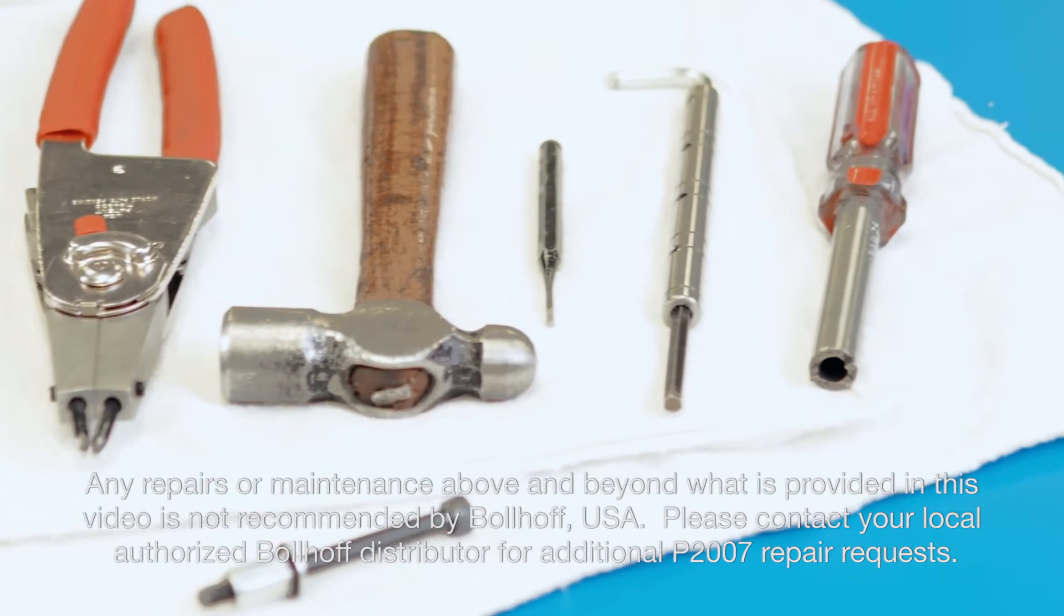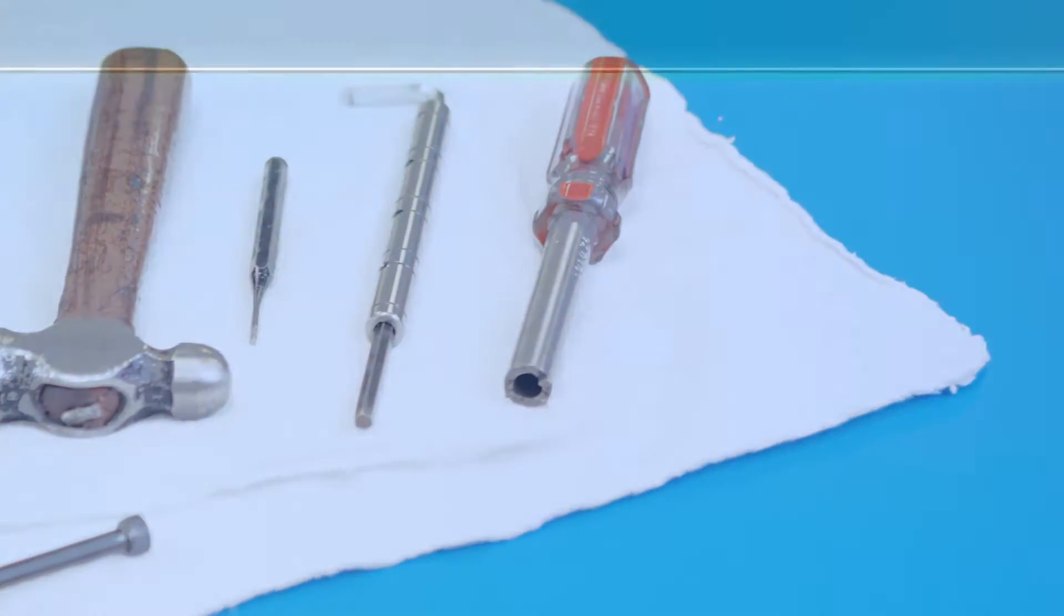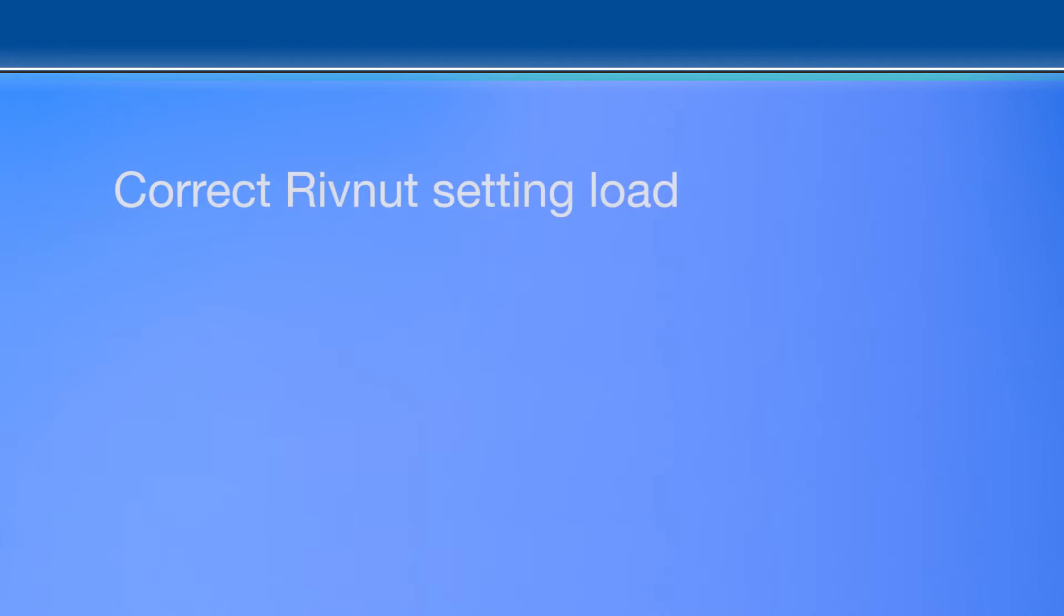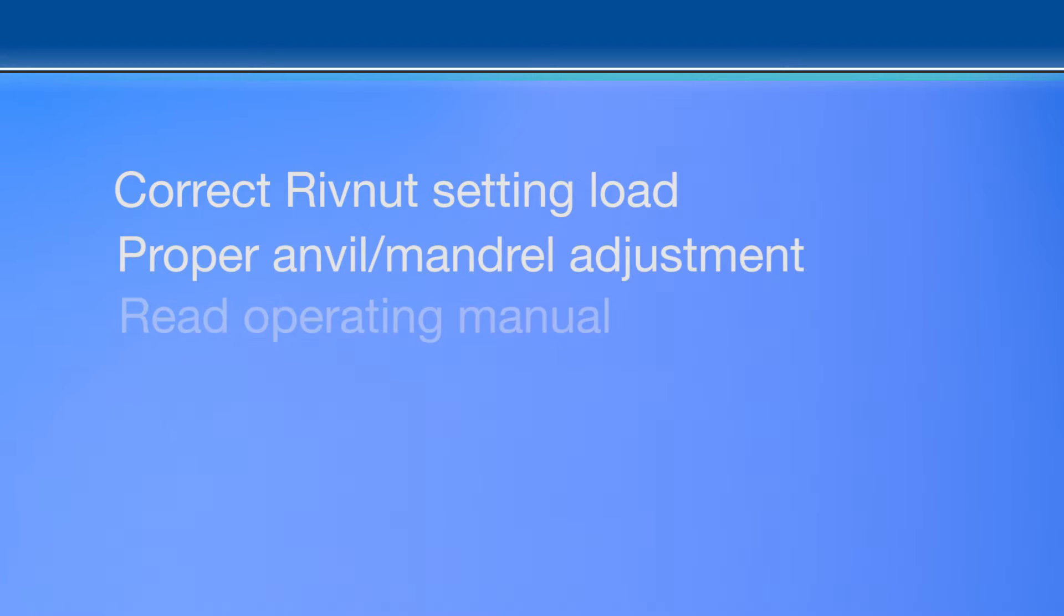Setting up your P2007 to run your production correctly will ensure the correct setting load of your rivnut. Adjusting the anvil mandrel correctly will also maintain the longevity of the mandrel. It is extremely important to read the operating manual for the P2007 before you use the tool.